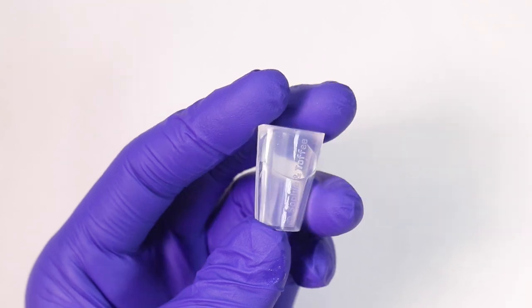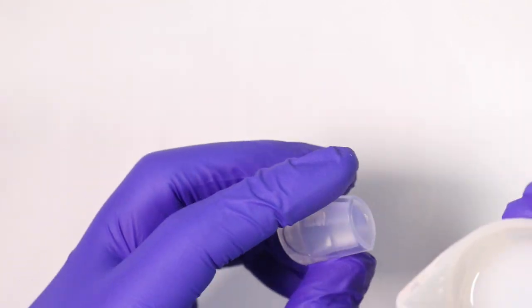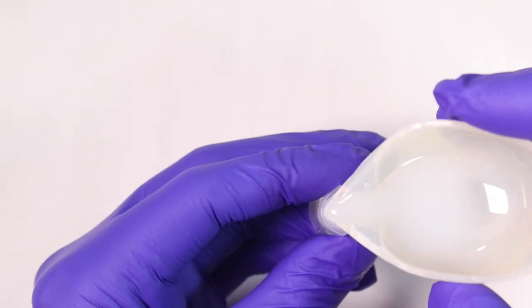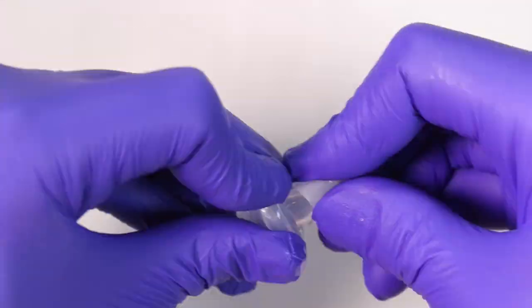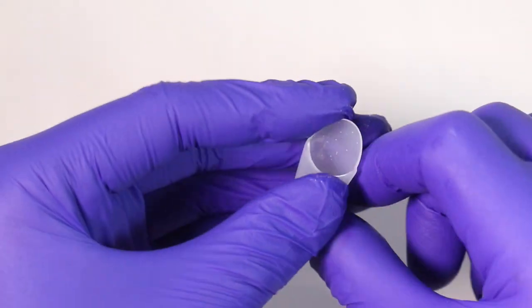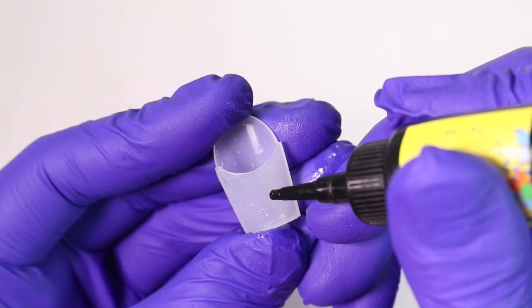So next we're going to make some fries. I have the fry case mold and I'm going to pour some white resin inside and let that cure. Taking this off was definitely very difficult, but here is the little fry container. It looks so good.